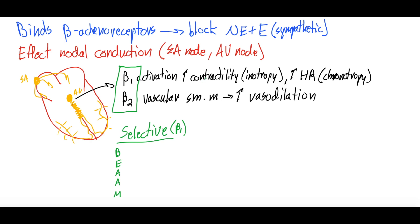Selective means that they are much more selective for beta 1 receptors on the heart, which are responsible for contractility and chronotropy or heart rate and inotropy.